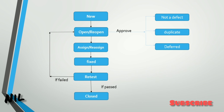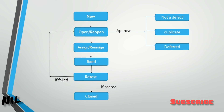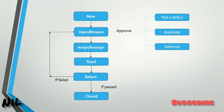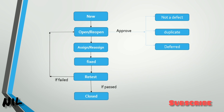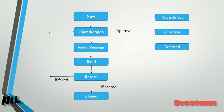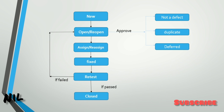After the fix, the defect moves to the Retest stage. At this point the defect has been validated, assigned, and fixed. The tester performs the retest using the same data. If the bug is fixed, it passes and moves to the Close state. If the bug is still failing, it is not yet resolved.